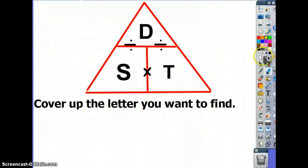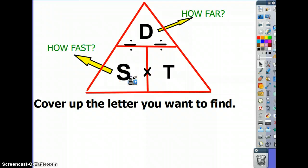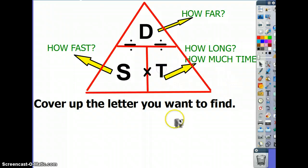So here were the notes that we took today. Just a quick reminder, the DST triangle can help you manipulate the speed, distance, or time formulas. If a problem asks you how far did the object go, it means they want you to find the distance. If a problem asks you how fast did the object go, it means they want you to find the speed. And if the problem asks you how long did it take, or how much time did it take the object to go, then it means that you're supposed to find the time of that object. So to use the DST triangle correctly, all you have to do is cover up the letter that you want to find within your problem.